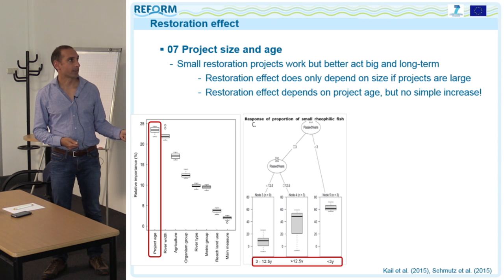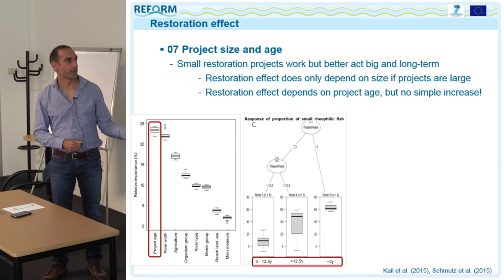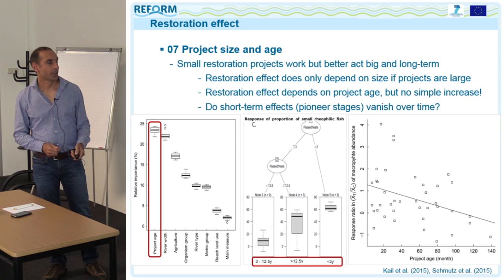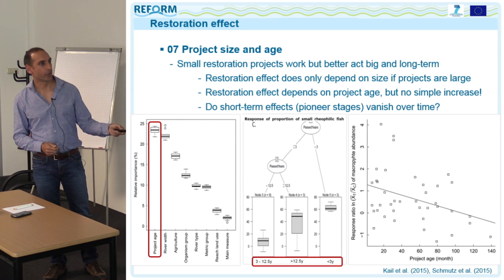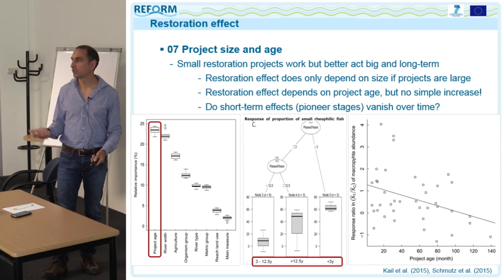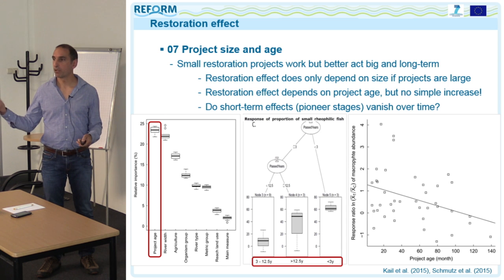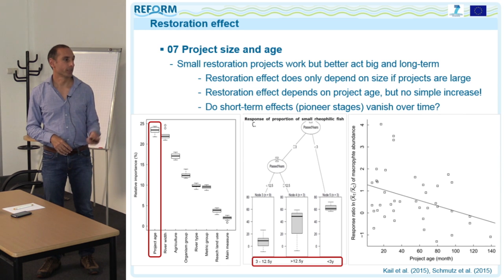However, restoration effects do not simply increase over time. There was a high effect on rheophilic fish species in both young and old projects, and a lower effect in medium-aged projects. We even found a negative effect of project age for macrophyte abundance — abundance was lower in older projects, indicating a decrease over time, possibly because pioneer habitats and stages mature and become less beneficial for the specific groups that colonize them.